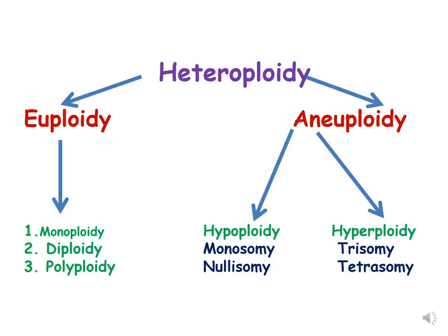Variation in chromosome number is classified as euploidy and aneuploidy. Euploidy is further classified as monoploids, diploids, and polyploids. Aneuploidy is classified as hypoploidy and hyperploidy. Hypoploidy is when the chromosome number is less than the diploid counterparts, and they are classified as monosomics and nullisomics. Hyperploidy is when the chromosome number is more than the diploid counterparts, and they are classified as trisomics and tetrasomics.